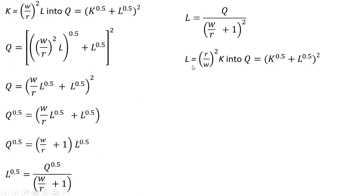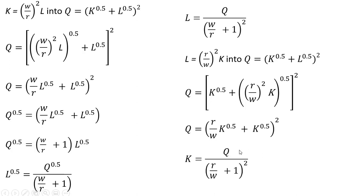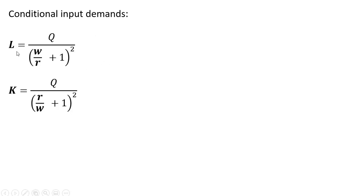We basically took this term here and solved it for L. After solving it for L, we plug that into the production function. Making that substitution and simplifying in a very similar manner, we get the following. Taking the square root of both sides and factoring out K to the 0.5 on the right-hand side gives us this result. So we've now found the conditional input demands, conditional on the level of output Q.